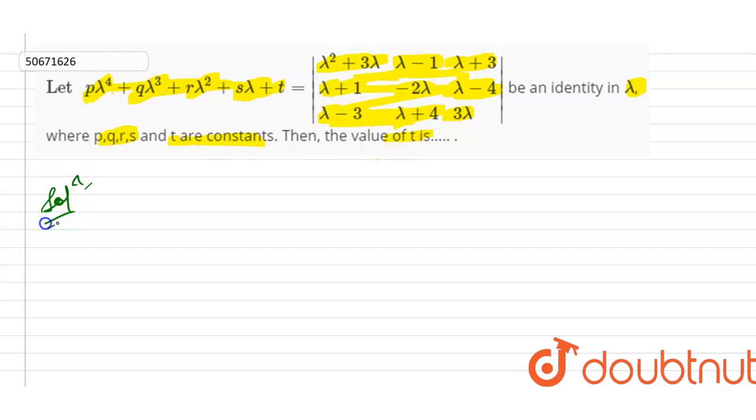Mujhe ye rakha hai: p𝜆⁴ + q𝜆³ + r𝜆² + s𝜆 + t is equal to 𝜆² + 3𝜆, 𝜆 + 1, 𝜆 - 3; 𝜆 - 1, -2𝜆, 𝜆 + 4; 𝜆 + 3, 𝜆 - 4, 3𝜆.